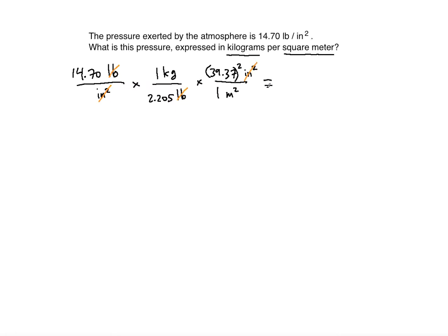So you can now deal with the numbers using your calculator. Let's see what that's going to be. 14.7 divided by 2.205 times 39.37 squared.